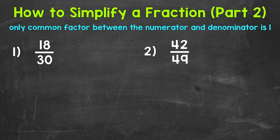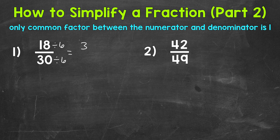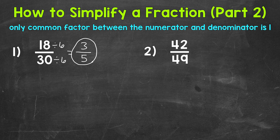And if you use the greatest common factor, you will simplify in one step. For example, with 18 and 30, I know that we can divide 18 by six — six is a factor of 18, and six is also a factor of 30. Six is actually the greatest common factor. So let's divide both by six: 18 divided by six is three, and 30 divided by six is five. Now the only common factor between three and five is one, so this is in simplest form. We were able to simplify in one step.